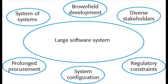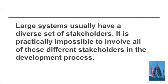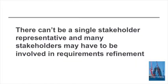Large systems have very diverse stakeholders from different parts of an organisation or from different organisations, and these stakeholders may have very different needs and requirements. So the idea that there can be a single stakeholder representative that can present the views of all of them is really not credible, and it's very difficult — practically impossible, in fact — to bring all of these stakeholders into the development process. So another fundamental aspect of agile development becomes much more difficult.